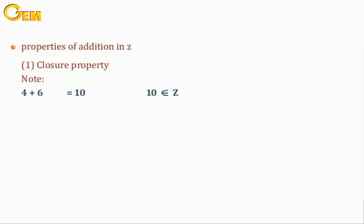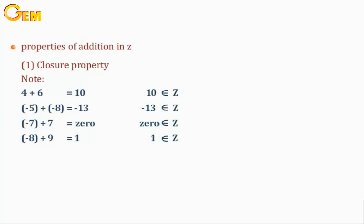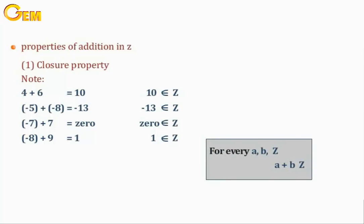Properties of addition in Z. Number 1: Closure property. For example, 4 plus 6 equals 10, and 10 belongs to Z. Negative 5 plus negative 8 equals negative 13, and negative 13 belongs to Z. Negative 7 plus 5 equals negative 2, and negative 8 plus 9 equals 1, which belongs to Z. Therefore, for every A and B belonging to Z, A plus B also belongs to Z.